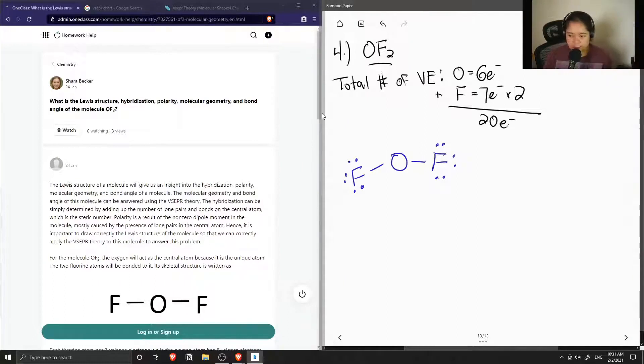If we recall that each bond contains two bonding electrons, then in total for this structure we have 16 electrons drawn out of the 20. For the remaining four electrons, I can add them as lone pairs on my oxygen atom like so.